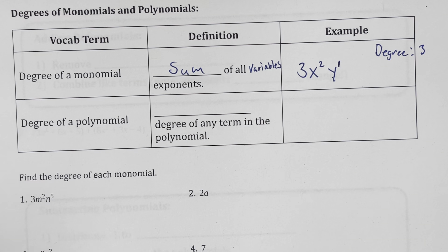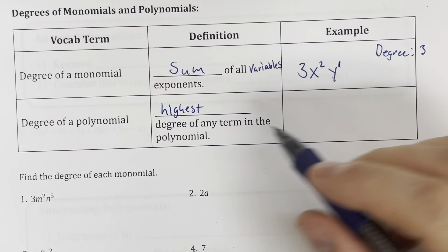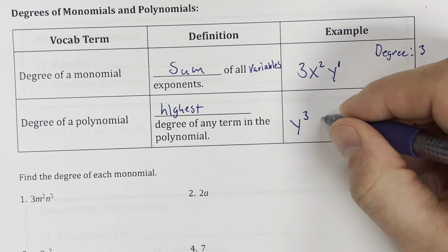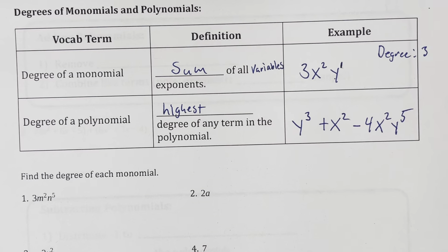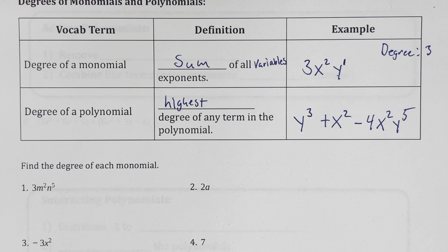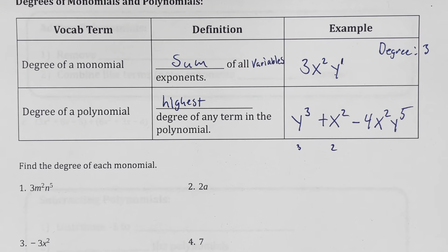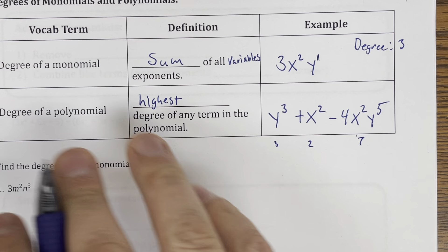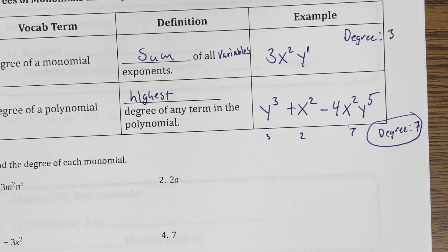The degree of a polynomial is the highest degree of any of the terms in the polynomial. For example, if we have y cubed plus x squared minus 4x squared y to the fifth, the degree of the first term is 3, the degree of the second is 2, and the degree of the last is 5 plus 2 which is 7. So the degree of the polynomial is 7 — we take the highest degree.